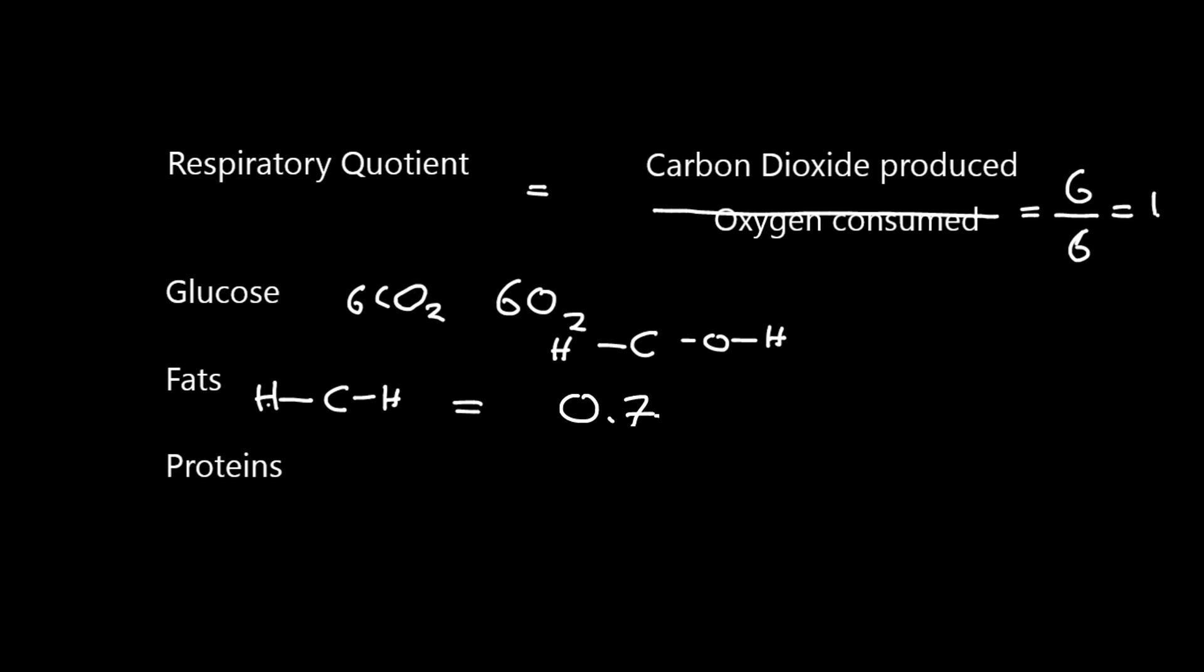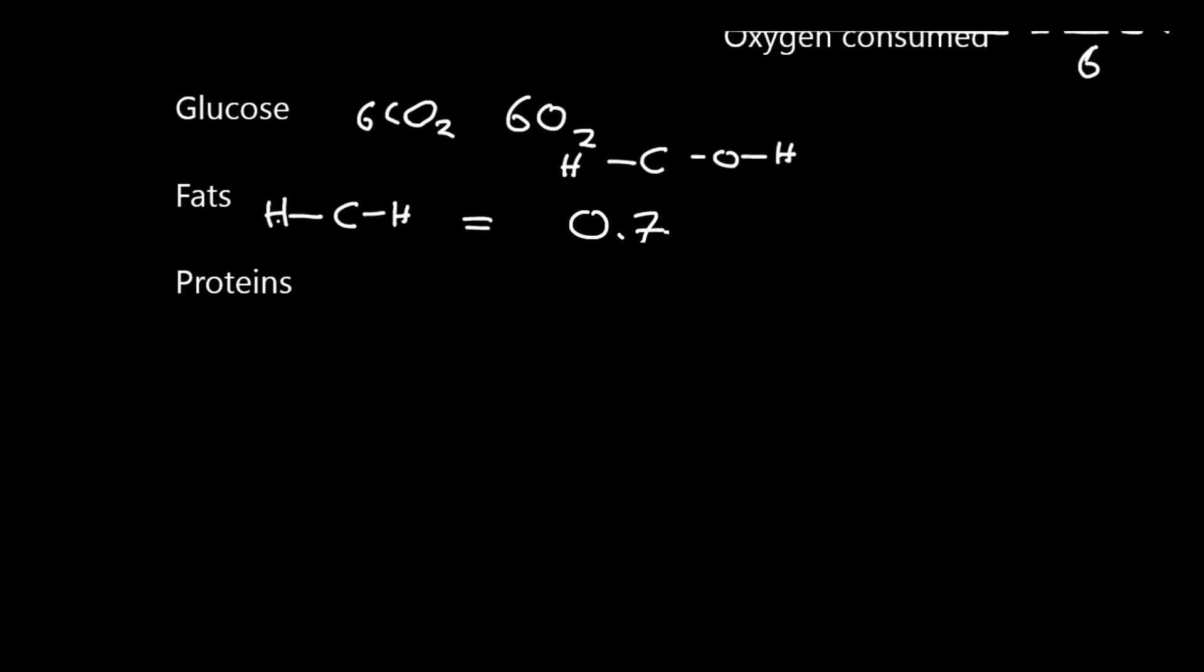Now, proteins vary because of the respiration of a protein. It involves the deamination of the amine group, and the amine group is then turned into urea in the liver. Now, depending on what the R group is will affect what the RQ is. So the RQ of proteins is around 0.9, but it will depend on what amino acids are present as to what the RQ will be.